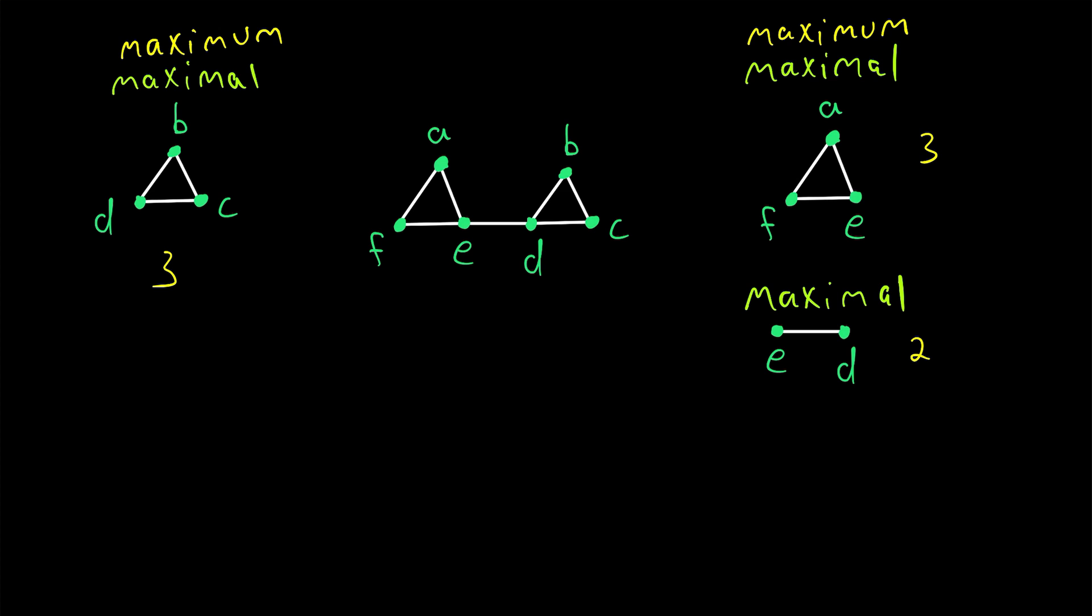A maximum clique of a graph is a clique with as many or more vertices than any other clique in the graph. And so, by definition, every maximum clique will be maximal. But not every maximal clique will be maximum.